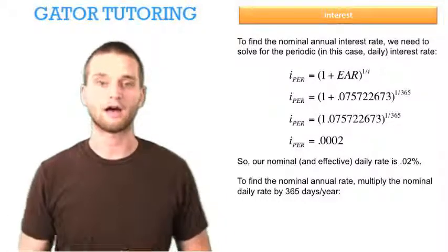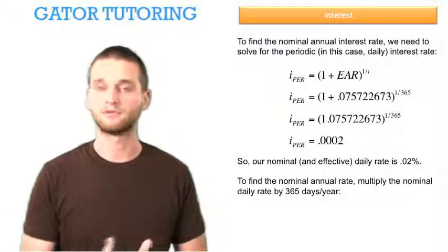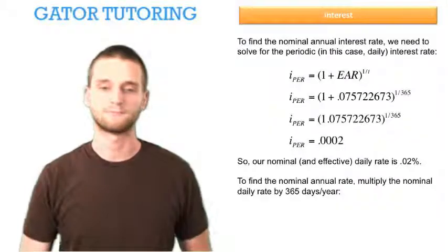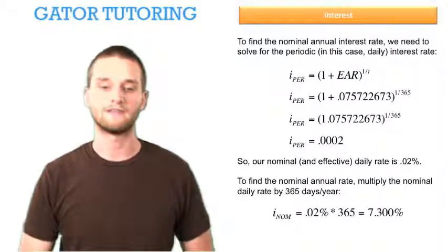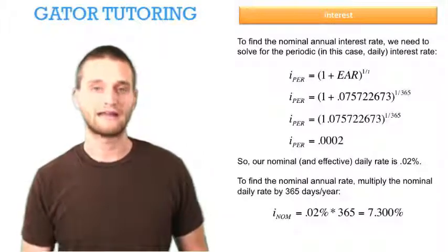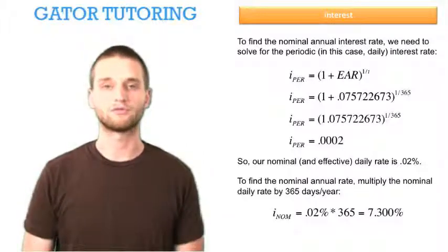We're not talking about compound interest here. That's the difference between the nominal and the effective rate. So we can just multiply this .02% by the 365 days there are in a year, and we see that the nominal or stated annual rate is 7.3%.